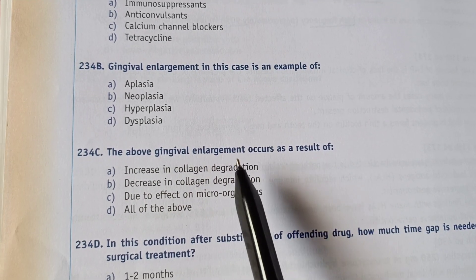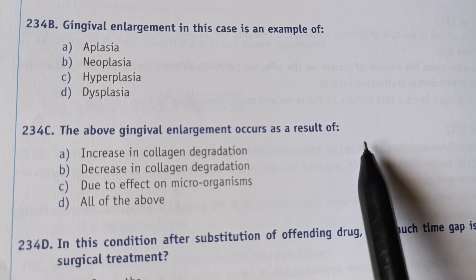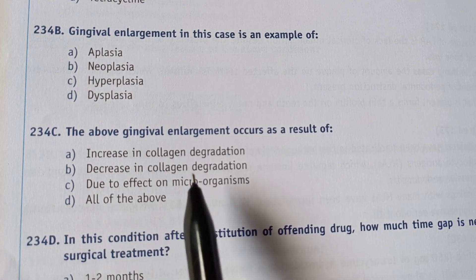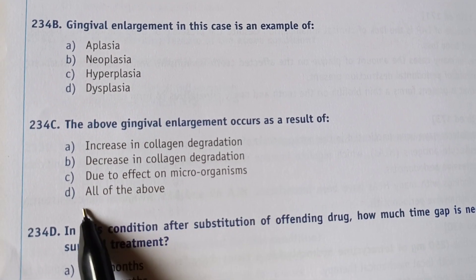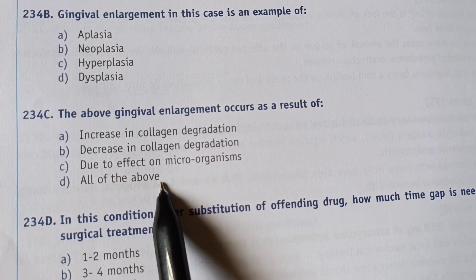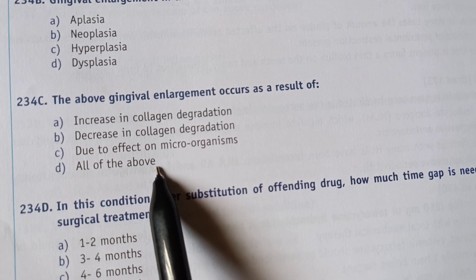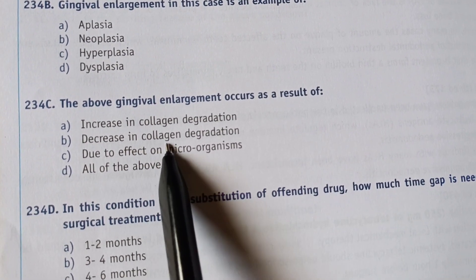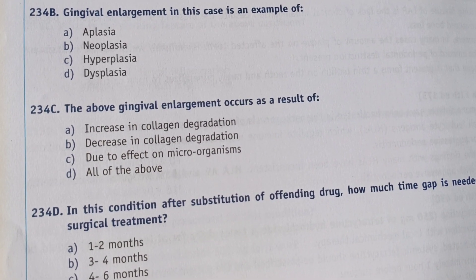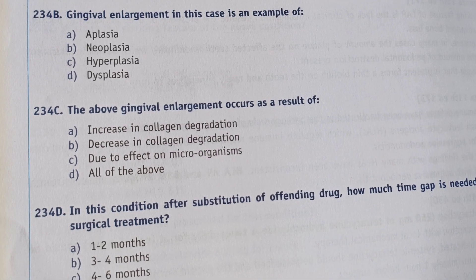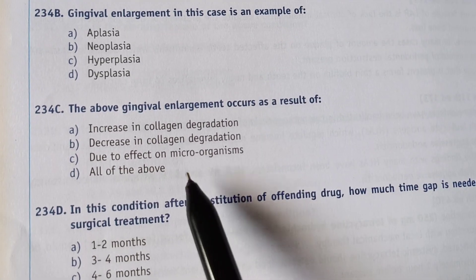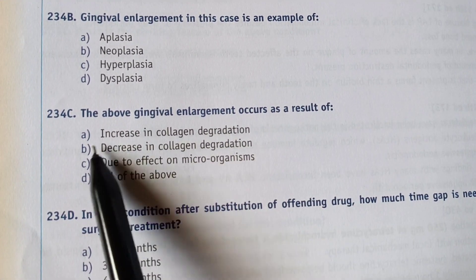Next question: the gingival enlargement occurs as a result of what? Options are: A) increase in collagen degradation, B) decrease in collagen degradation due to effect of microorganism, C) all of the above. The right answer is option B — decrease in collagen degradation. There is lack of collagen degradation, which results in gingival enlargement.